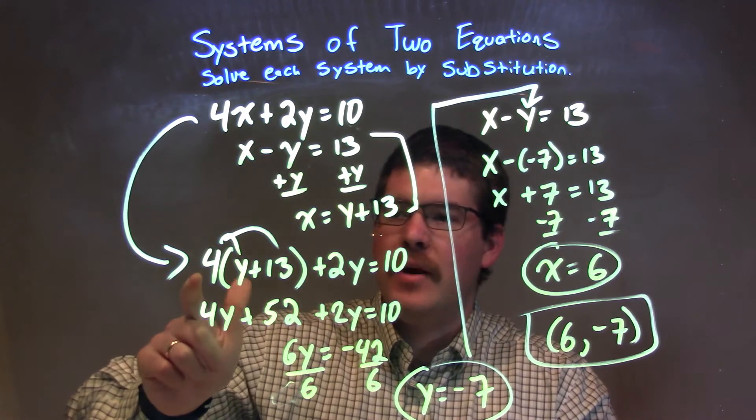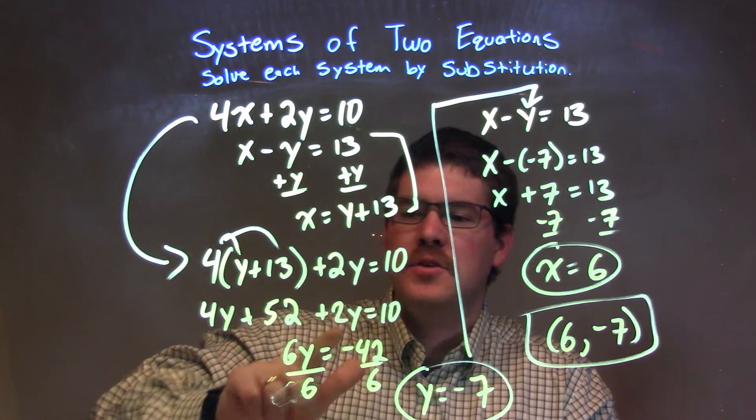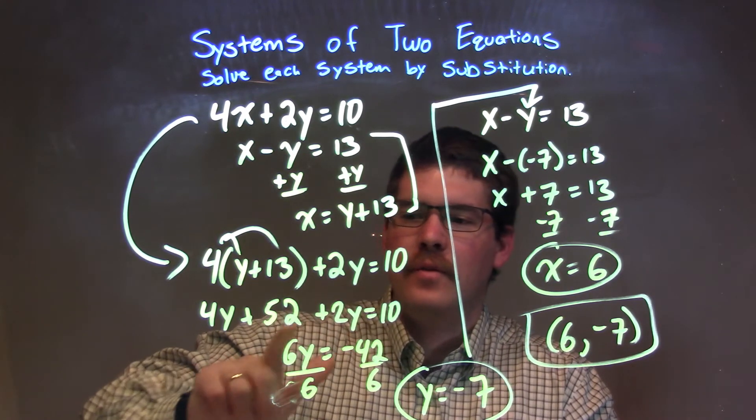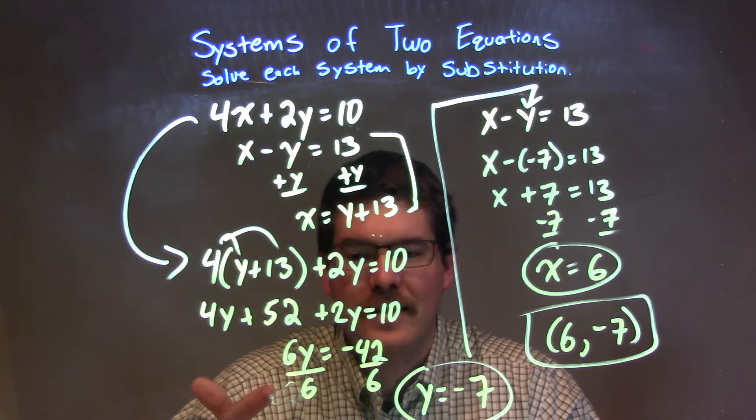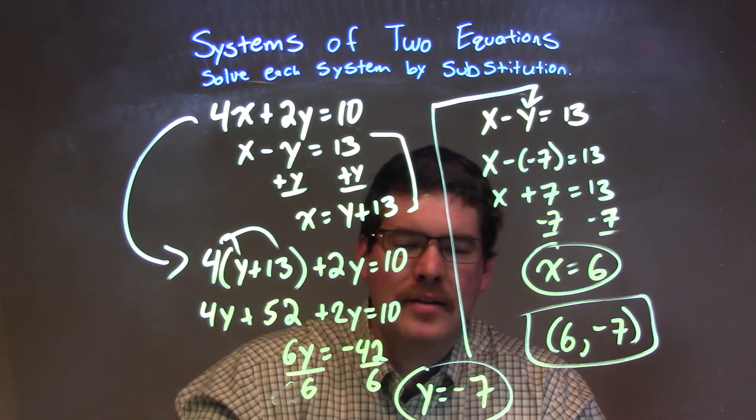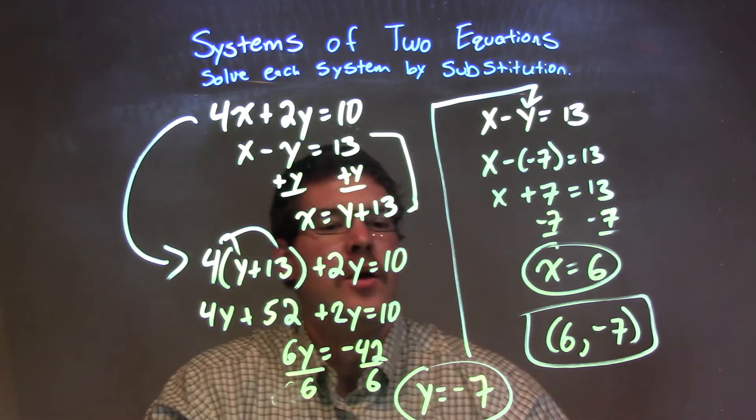I simplified by distributing the 4 across, and combined 4y and 2y to be 6y, and subtracted 52 from both sides to get negative 42 on the right. Divided both sides by 6 to get y by itself to be negative 7.